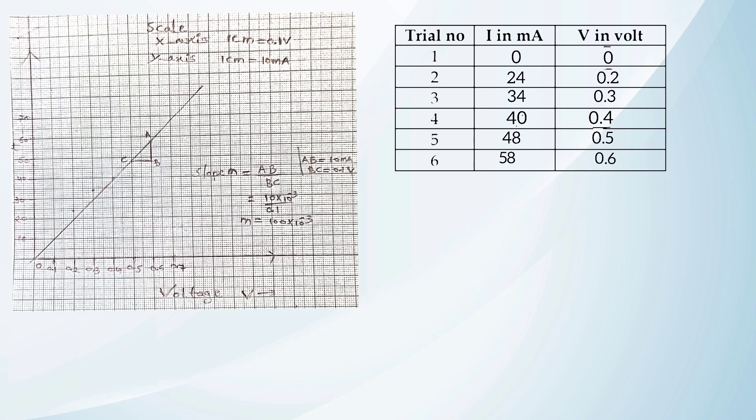We took six readings. From these six readings we plot a graph of voltage versus current — voltage on the x-axis and current on the y-axis. For each centimeter on the x-axis, voltage is taken as 0.1, 0.2, 0.3 volts, and for the current, 10 milliampere per centimeter.